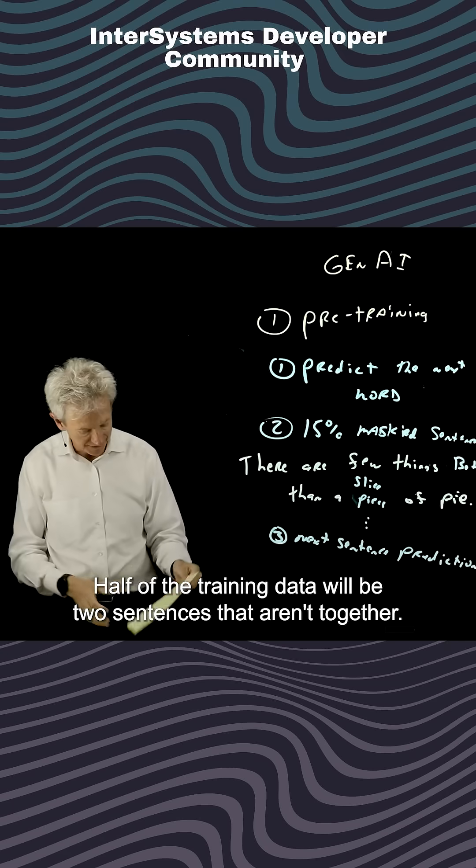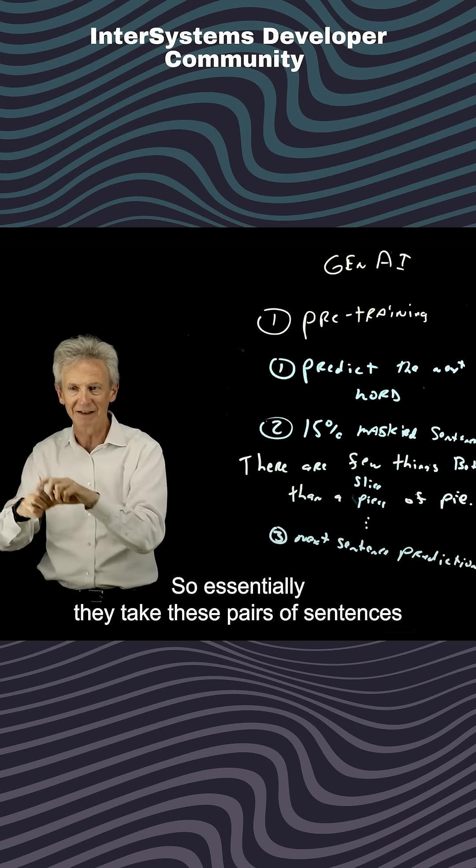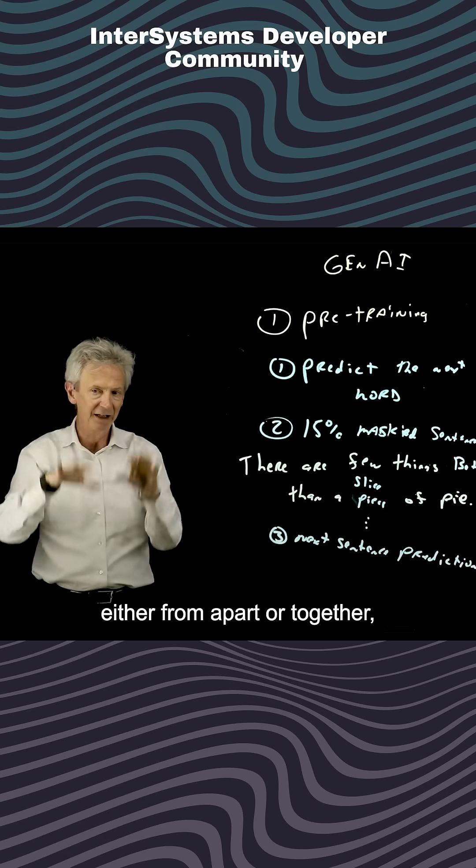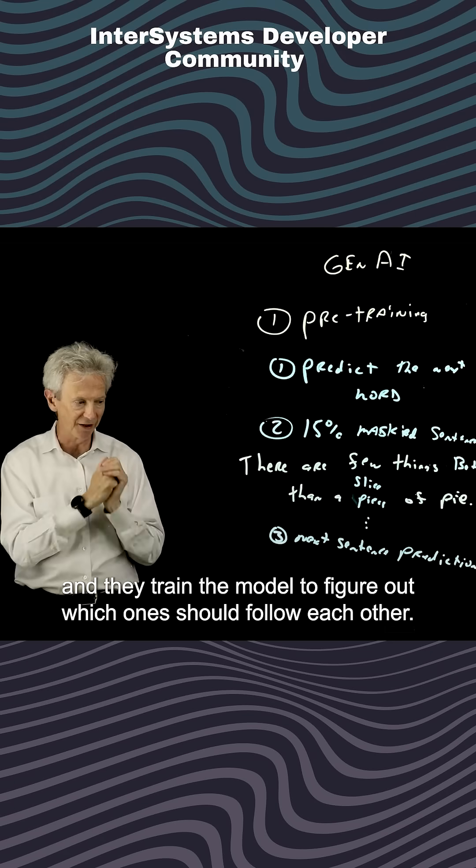Half of the training data will be two sentences that aren't together. So essentially, they take these pairs of sentences, either apart or together, and they train the model to figure out which ones should follow each other.